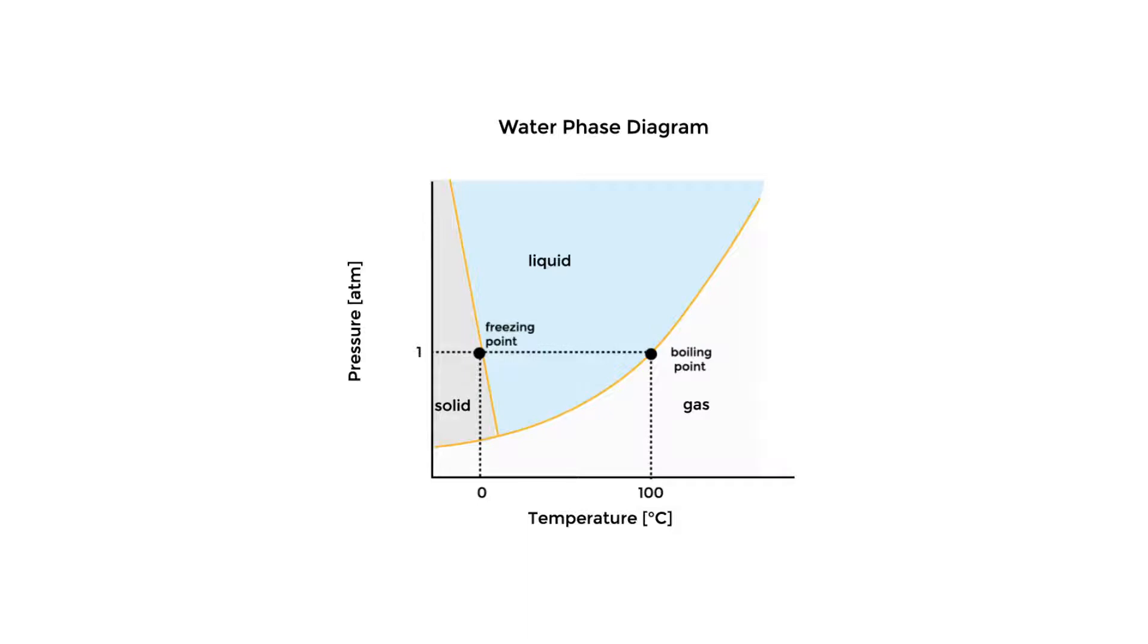An example I like to use to illustrate the impact of pressure is the phase diagram for water. In this case, my composition is constant. It's simply H2O. We can see pressure in atmospheres along my y-axis and temperature in degrees centigrade along my x-axis. At 1 atmosphere, which is our standard atmospheric pressure, water freezes at 0 degrees C and boils at 100.